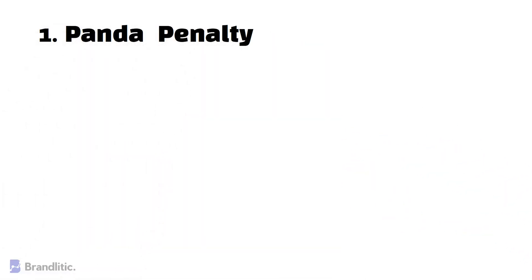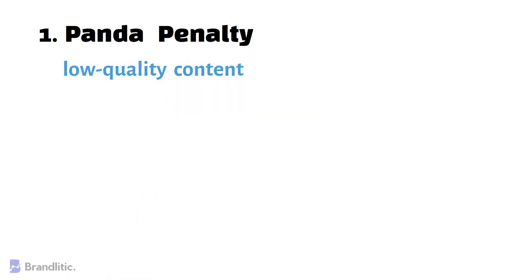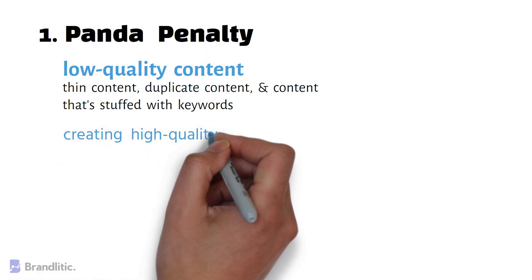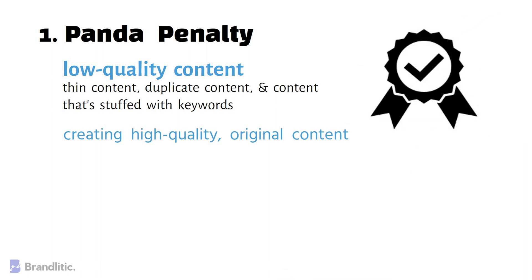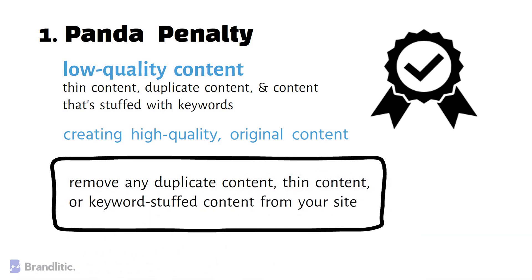The Panda Penalty targets low-quality content, including thin content, duplicate content, and content that's stuffed with keywords. To fix this penalty, you need to focus on creating high-quality, original content that provides value to users. If you're facing this penalty, you should remove any duplicate content, thin content, or keyword-stuffed content from your site.